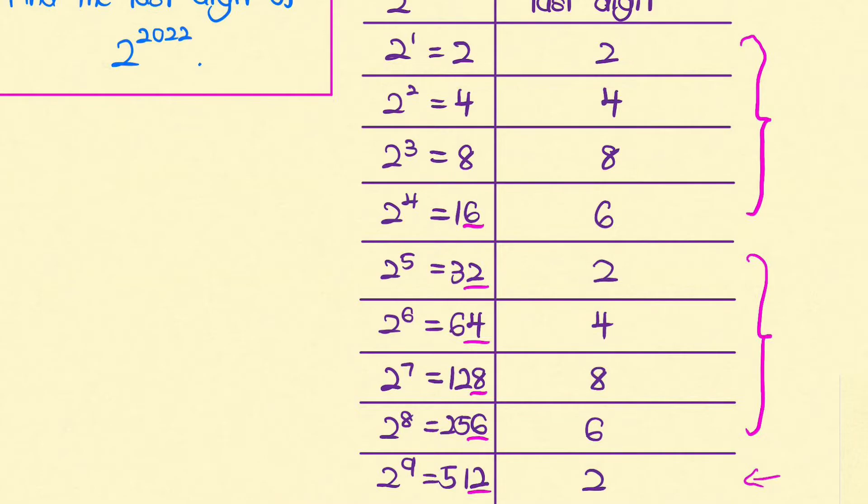As we can see, 1 divided by 4 has a remainder of 1. And 2 divided by 4 has a remainder of 2. 3 divided by 4 has a remainder of 3. 4 divided by 4 has a remainder of 0.